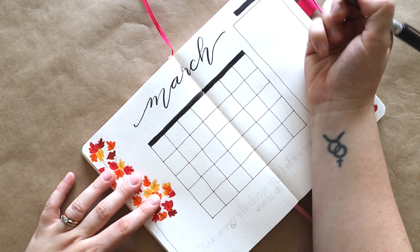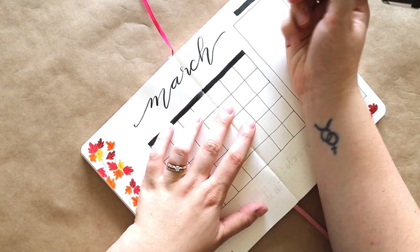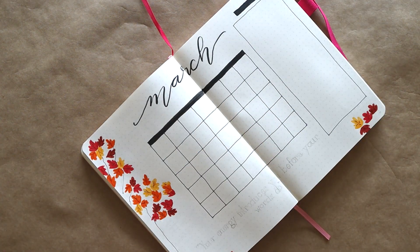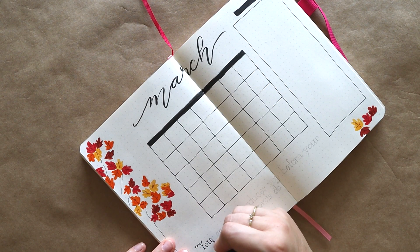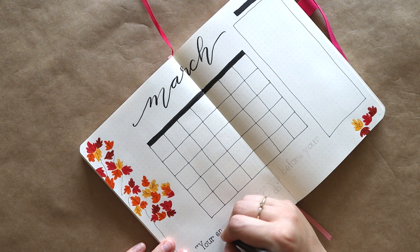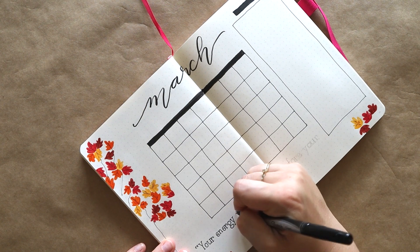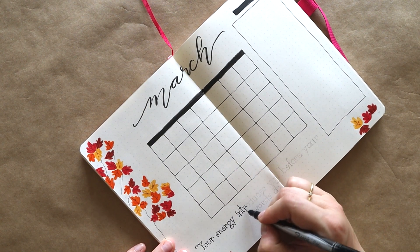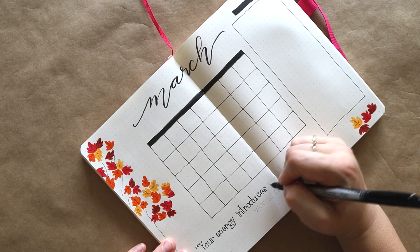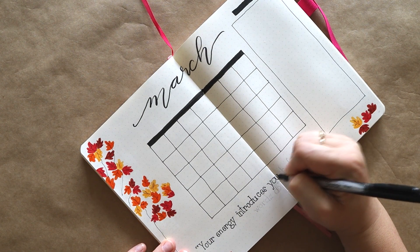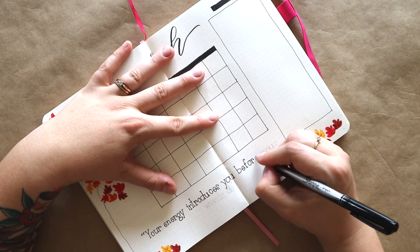I can't believe it's March already. This year is going so fast. I'm using my fine tip marker again just to write in the quote for the month, which is 'your energy introduces you before your words do.' I think that's very pertinent for me at the moment. I think I've been struggling a little bit with keeping my energy levels feeling high and positive, so I just wanted to kind of remind myself that it's a choice that I have to create an energy that speaks well of me.